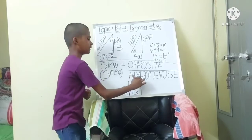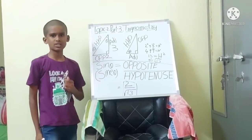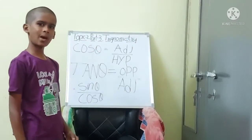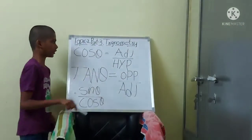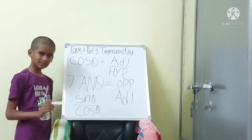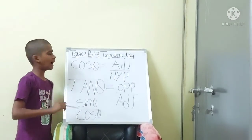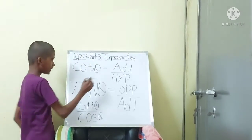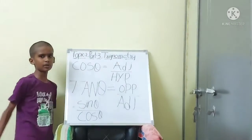Next, we will see about cos theta. Cos theta equals adjacent side divided by hypotenuse. The side along the angle of theta is the adjacent side. So cos theta is adjacent by hypotenuse.